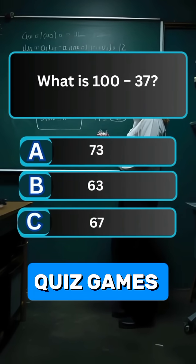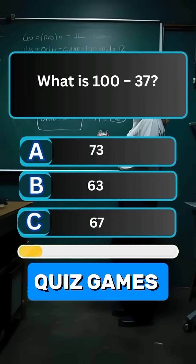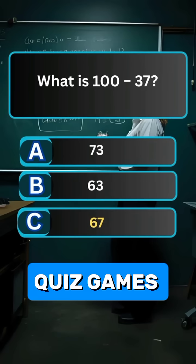Question 5. What is 100 minus 37? Answer C. 63.